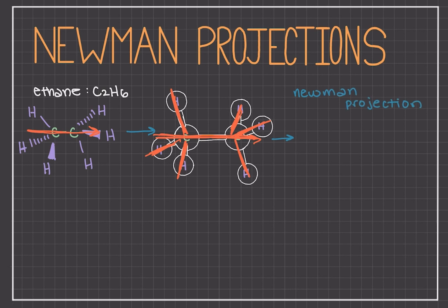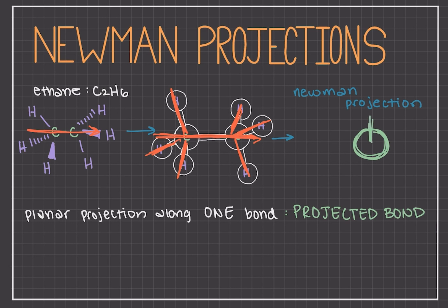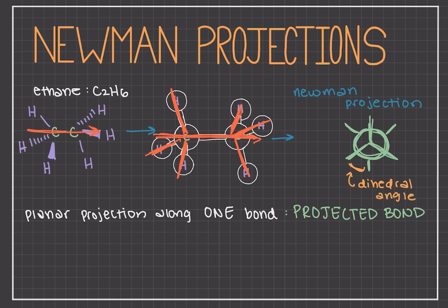A Newman projection is a type of planar projection along one bond, which is called the projected bond. In ethane, the carbon-carbon bond is our projected bond. To draw a Newman projection you start with a circle, which represents the near carbon in the projected bond. The lines coming out of the circle meet at the center and extend beyond the boundaries of the circle — these three lines represent the three bonds made with that near atom. We then draw three lines coming out of the boundary of the circle, representing the bonds with the further atom, the second carbon. The lines are drawn based on the orientation or dihedral angle of the atoms between each carbon. Since the hydrogens are staggered, all the lines are drawn staggered to each other. In Newman projections only the near atom is shown; both the projected bond and the second atom are hidden behind the Newman projection.